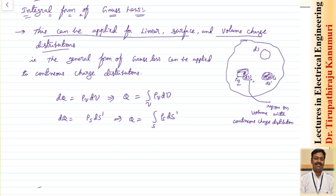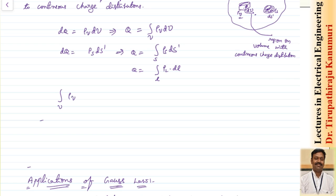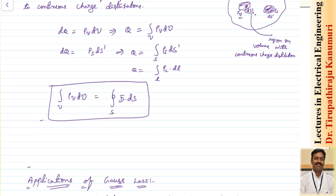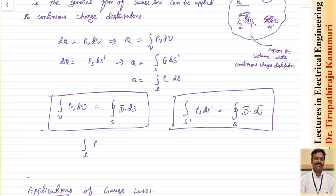Similarly, for a line charge density ρ_L, the charge is calculated as the line integral of ρ_L dL, and this equals the closed surface integral of D dot dS. So in general, whether the enclosed charge is a volume, surface, or line distribution, the flux leaving the closed surface — the closed surface integral of D dot dS — equals the total charge enclosed.